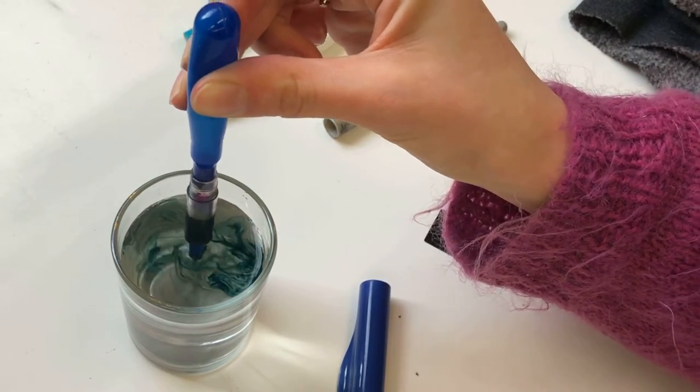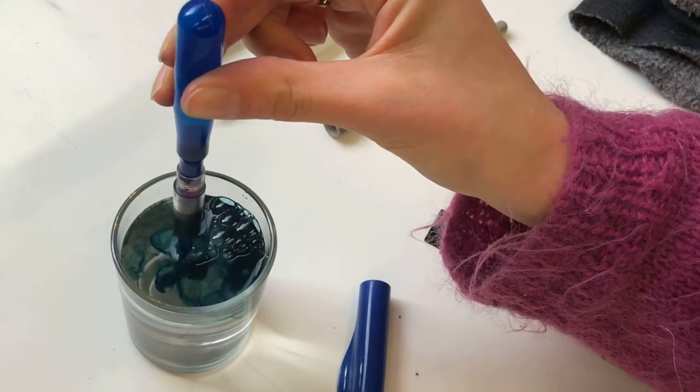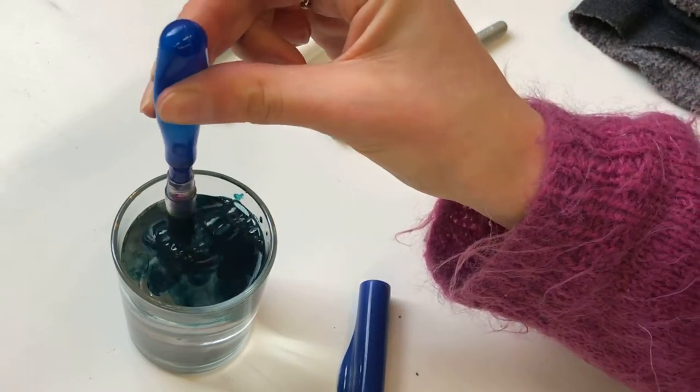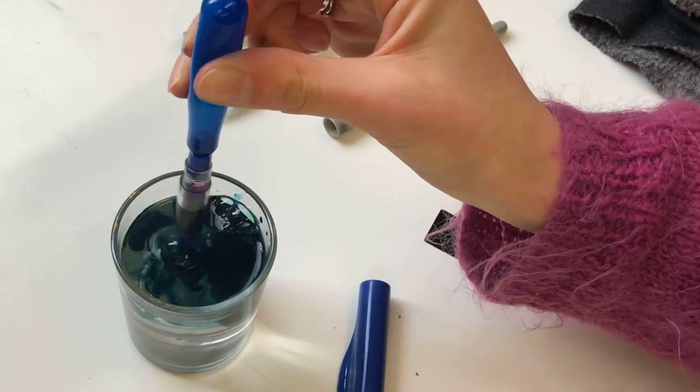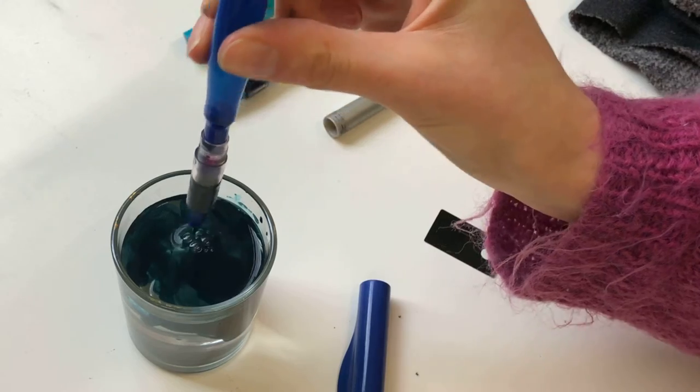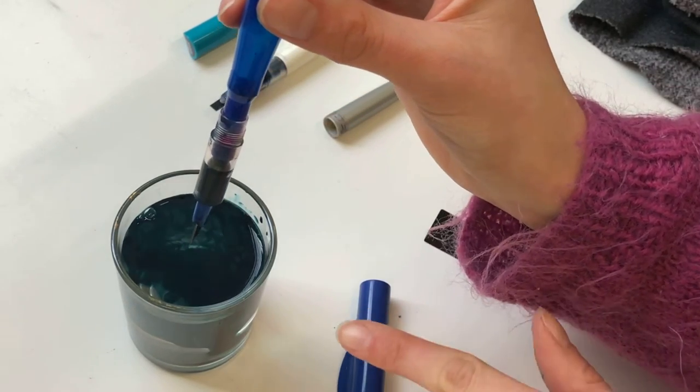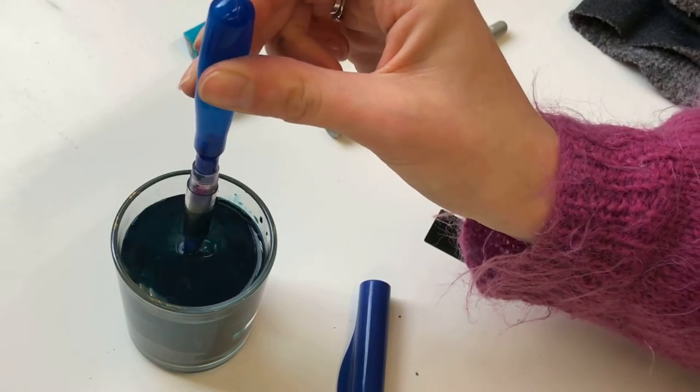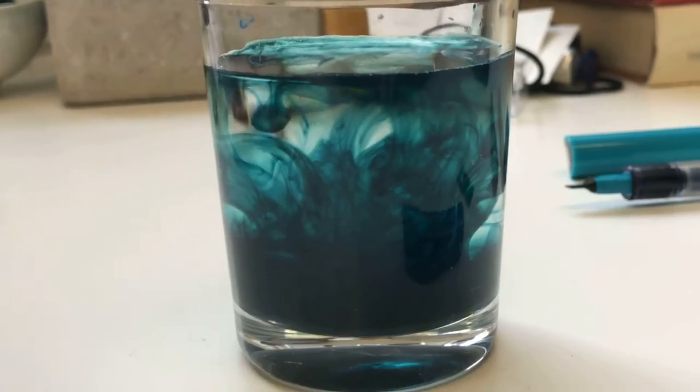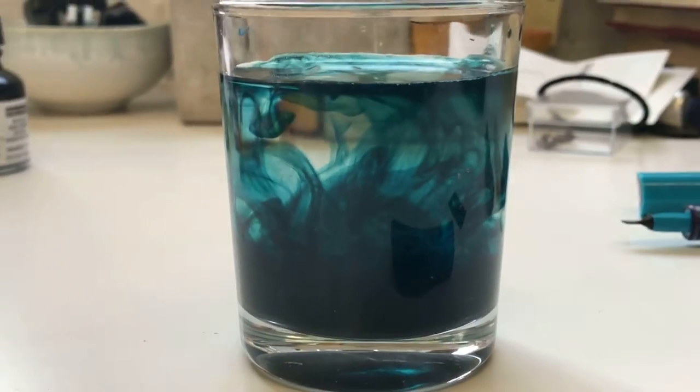You see all the ink coming out. This is quite a lot of excess ink in there. It looks really cool from this angle. If you do this in a clear glass and just remove the camera so you can see.